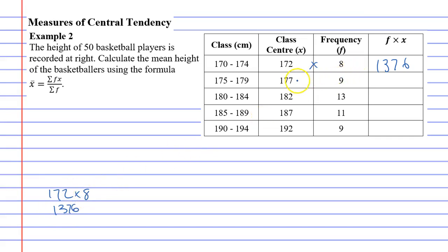Then you've got 9 players at 177, so you just multiply that, f times x. We get 1,593. And we've got to keep multiplying across, like so. So 182 times 13, 2,366. Then 187 times 11, which is 2,057. And then finally, 192 times 9, which is 1,728.